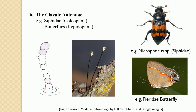The next type is clavate antennae. In clavate antennae, the successive segments of the flagellum become gradually broader toward the distal portion, giving a club-shaped form to the antennae. As you go toward the terminal end of the antennae, the breadth of the flagellar segments increases and at the distal-most portion it becomes completely club-shaped. This antennae is found in insects of the family Cerambycidae in order Coleoptera and is very common among butterflies in order Lepidoptera.